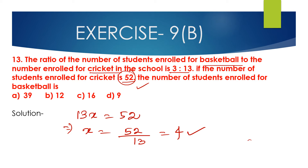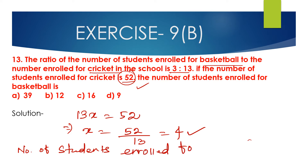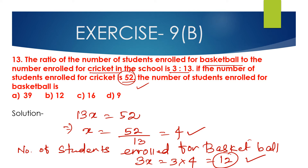So the number of students enrolled for basketball will be 3x, which is equal to 3 multiplied by 4, which is equal to 12. So the number of students enrolled for basketball is 12. Option B, which is 12, is the correct option.